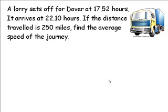A lorry sets off for Dover at 17:52 hours and arrives at 22:10 hours. If the distance travelled is 250 miles, find the average speed of the journey.